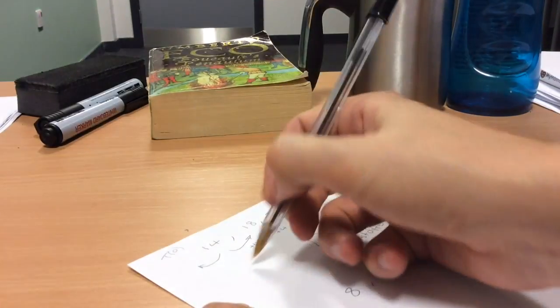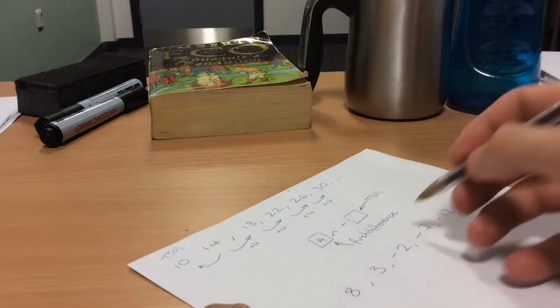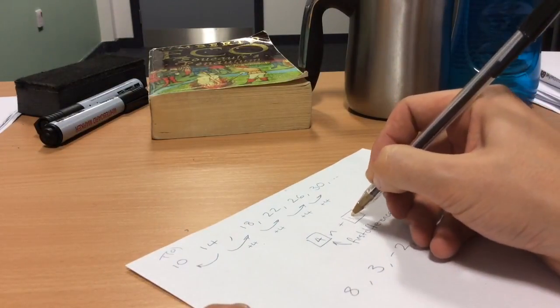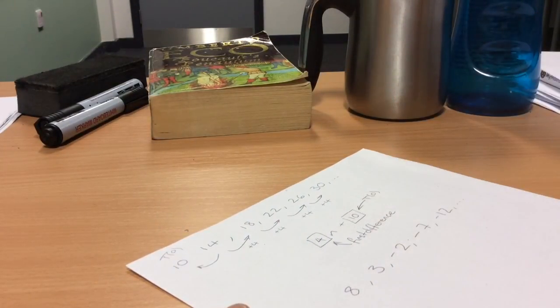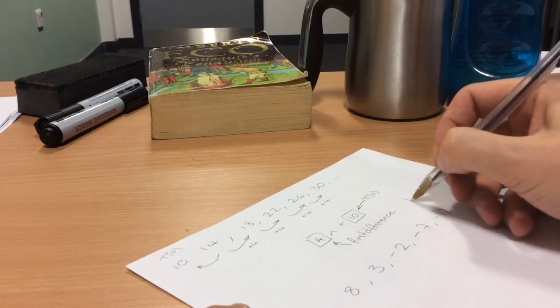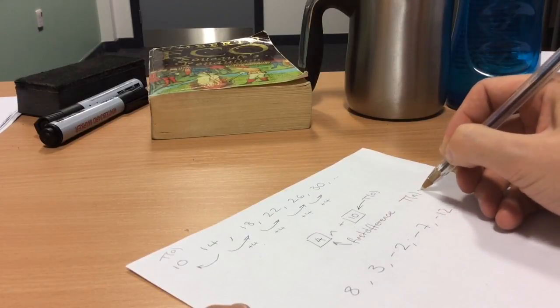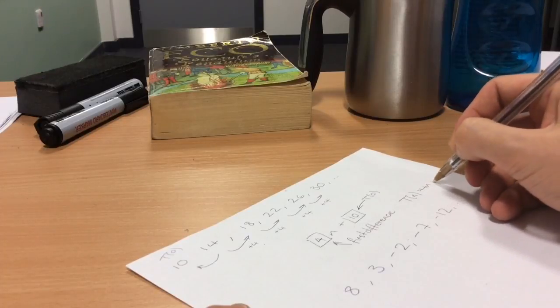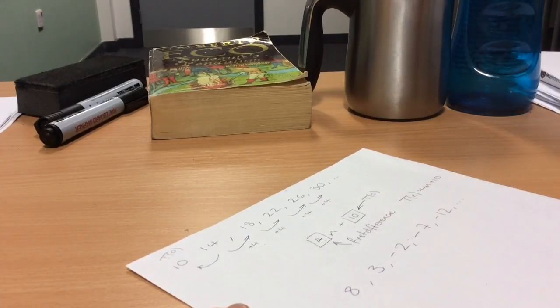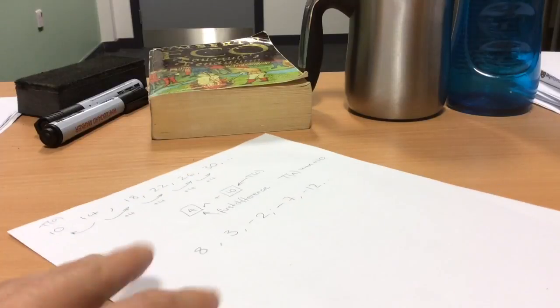And in this case because we're going up in fours it must be 10. So 10 goes in this box. So what is the nth term of this sequence? tn is 4n plus 10. Okay, I've got a second example which goes 8, 3, negative 2, negative 7, negative 12.